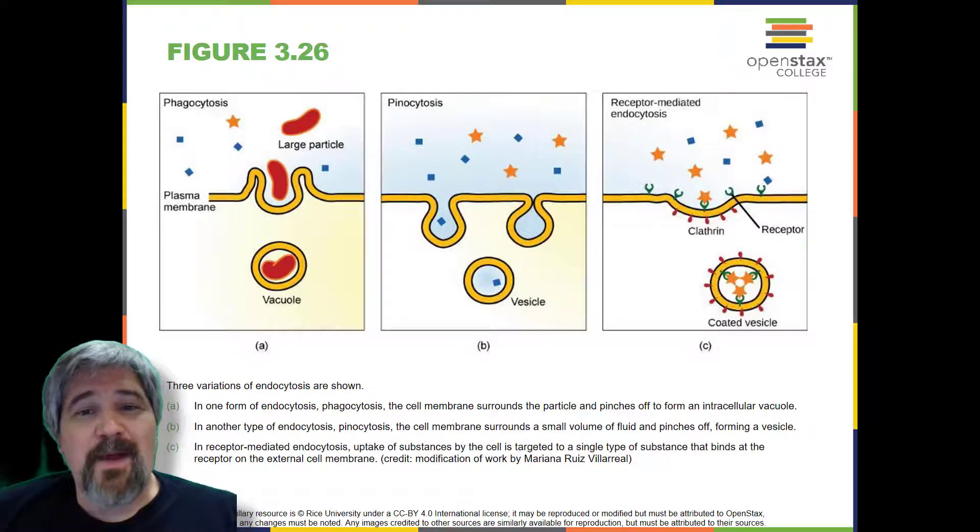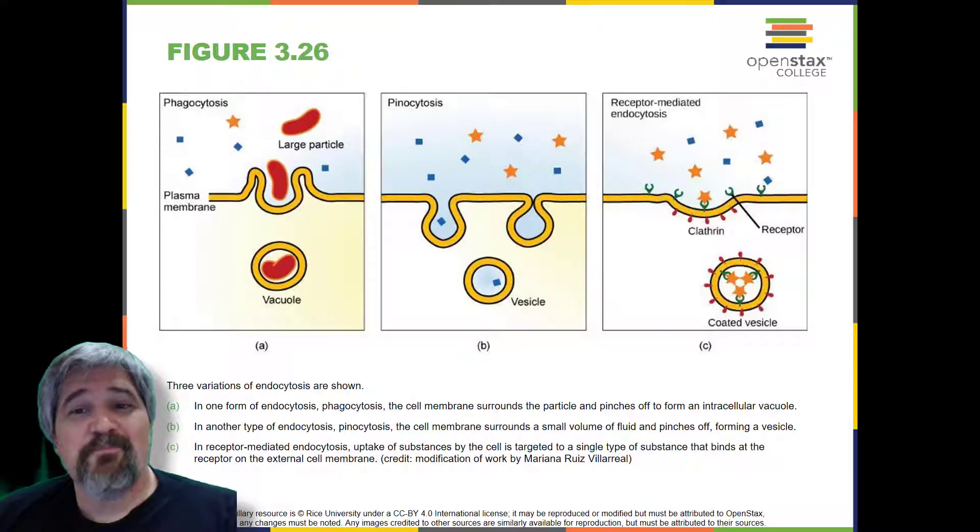Phagocytosis is the process by which large particles, such as cells, are taken in by a cell. For example, when microorganisms invade the human body, a type of white blood cell called a neutrophil removes the invader through this process, surrounding and engulfing the microorganism, which is then destroyed by the neutrophil.